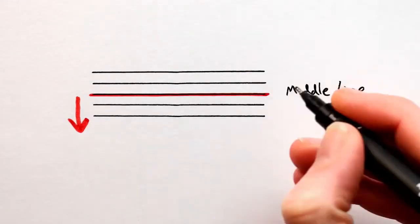Rule 1: If a note is below the middle line, its stem will go up, like this.